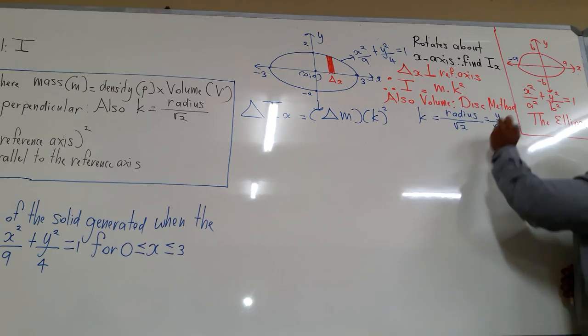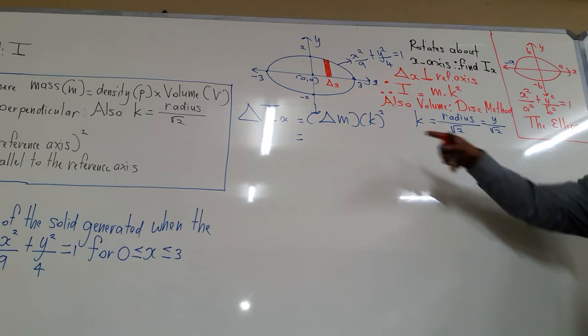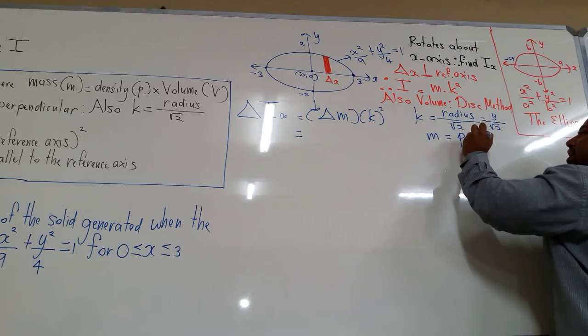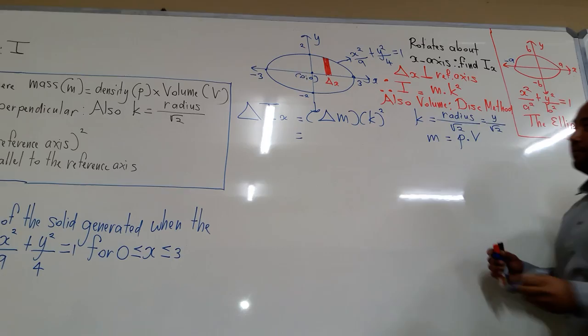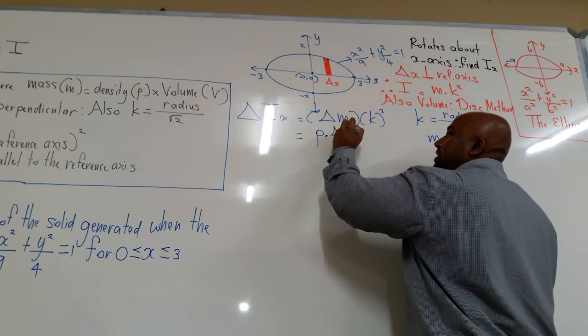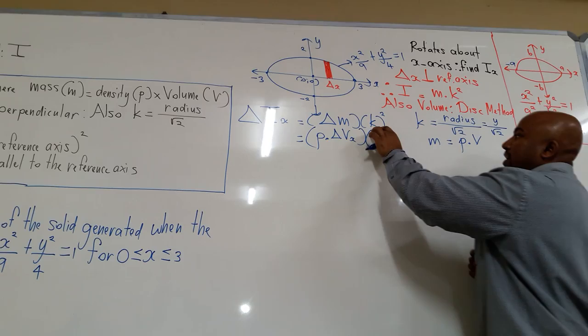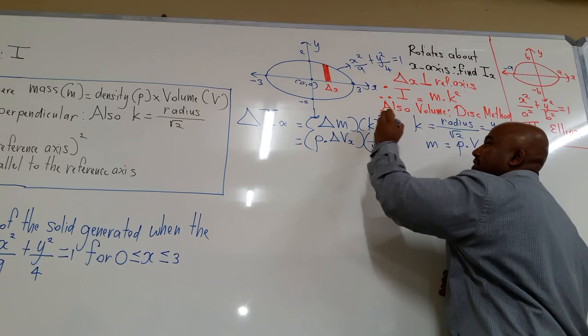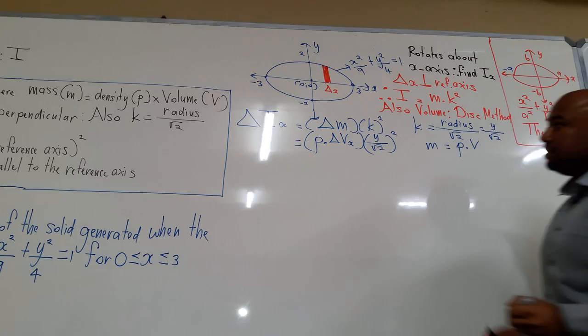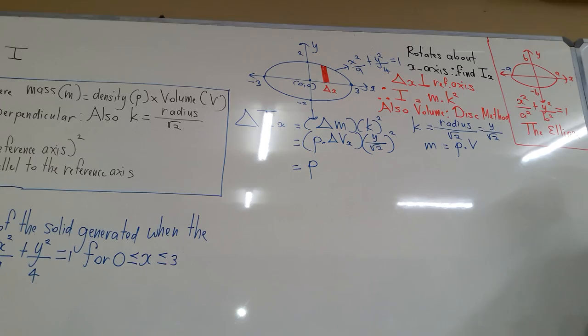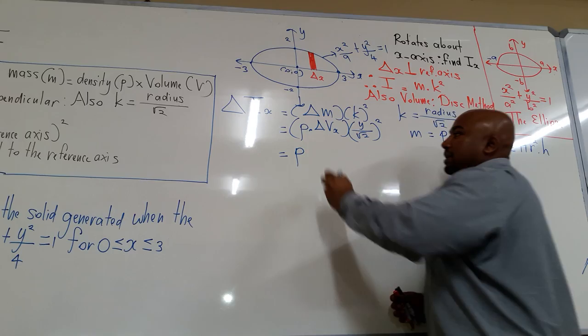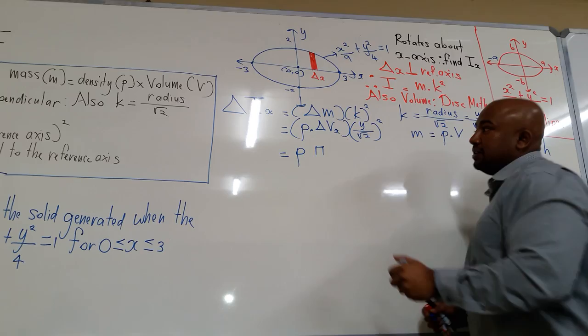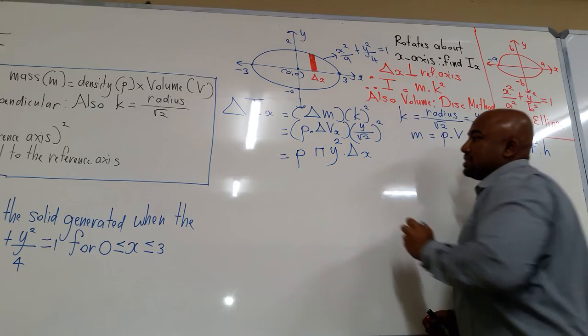Mass equals density times volume, so delta m equals rho times delta V_x, because we are rotating about the x-axis. Using the disk method, volume equals area of base times perpendicular height, which is pi times r squared times delta x — here r equals y, so that is pi y squared delta x.